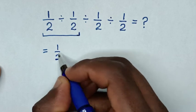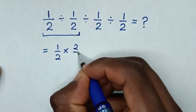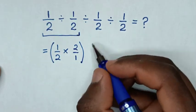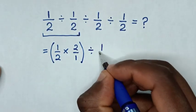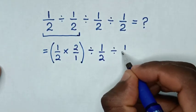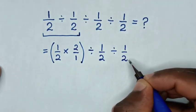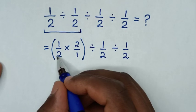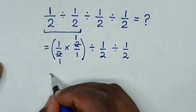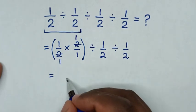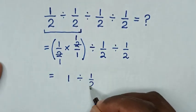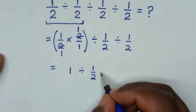So it will be 1 over 2 times 2 over 1, then bracket, divide by 1 over 2, then divide by 1 over 2. In the next step, to simplify this, you cancel by 1 and this by 1. So it will be equal to 1, then divide by 1 over 2, then divide by 1 over 2.